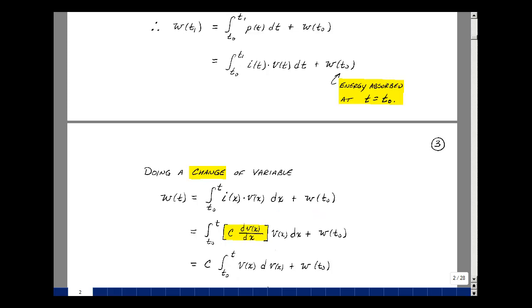From our definition of the capacitance, we have that I is equal to CdV dt, but we're using a dummy variable x, so it's going to be C times dV of x dx, times the voltage V of x dx. The dx's cancel. Take the C out in front because it's a constant. At the integral, then, of V of x, dV of x, plus the initial condition.